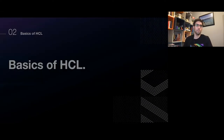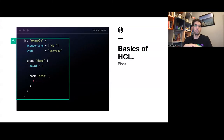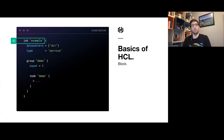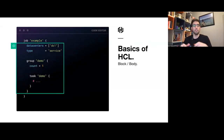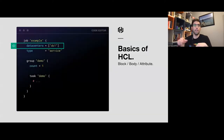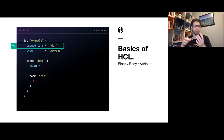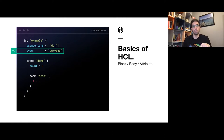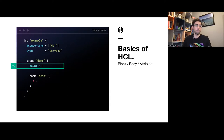HCL is organized around the idea of blocks, which are delimited by curly braces. Each block has an identifier and zero or more labels. Inside the block, you have its body, which can contain attributes or other blocks. Attributes have the format of an identifier, equals sign, and an expression. The expression can call functions or directly represent data types like lists, strings, numbers, or booleans.